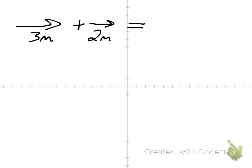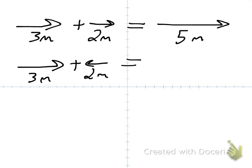So let's start off with some easy ones. We have 3 meters east plus 2 meters east, so you just add 3 and 2, and that gives you 5 meters east. Then you have 3 meters east plus 2 meters west. The west is going in the negative direction, so you do 3 minus 2, which gives you 1 meter east.